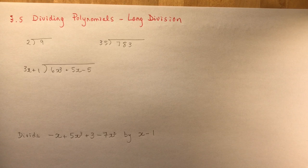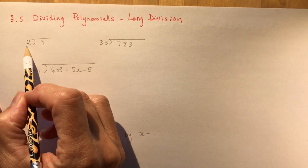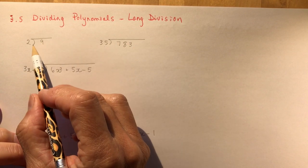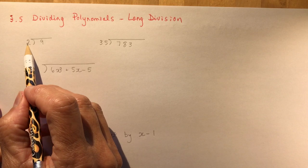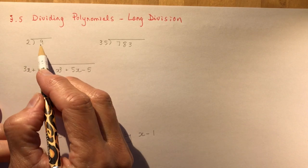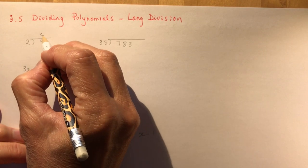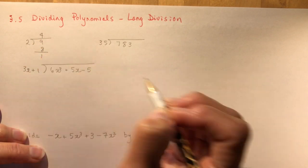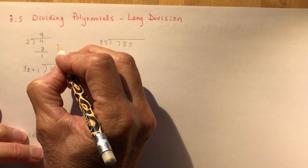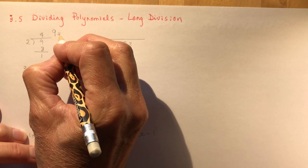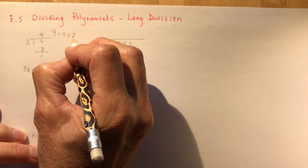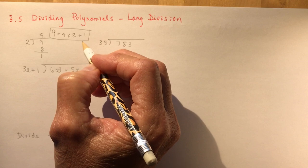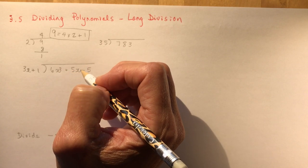Let's start with something basic. Remember, this is how you write a long division — you have the dividing sign. So if I want to divide two into nine, I ask how many times it can go in: four. Four times two gives me eight, subtract, and I get one. So nine equals four times two plus one, and this is what we call the division statement.